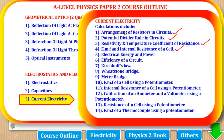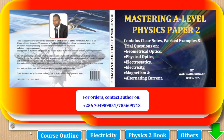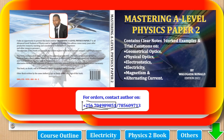So far, these are the calculations we have gone through: arrangement of resistors in circuits, potential divider rule, and resistivity and temperature coefficient of resistance. Now we are going to go through the calculation of EMF and internal resistance of a cell. We are dealing with calculations from the worked examples of this book. The complete notes, worked examples and trial questions can be found in Mastering A-Level Physics paper 2. If you need a copy, you can contact the author on the provided contacts or send a WhatsApp message.